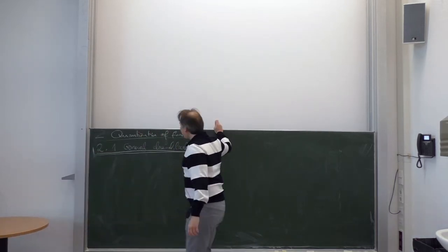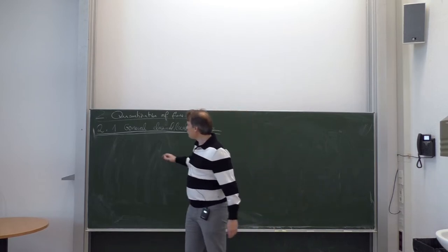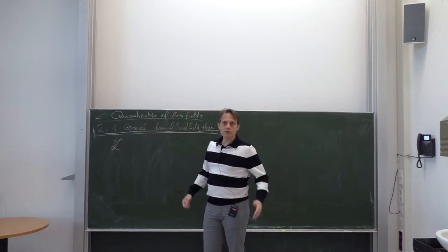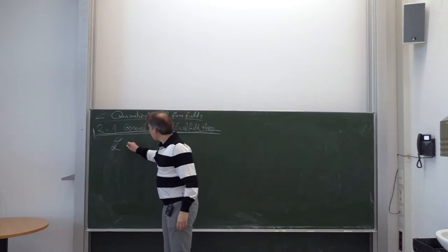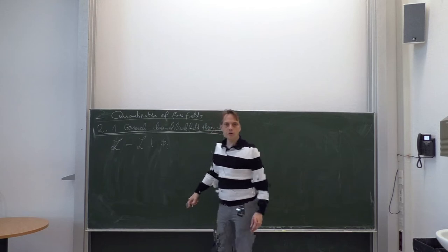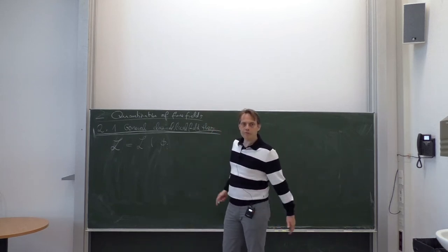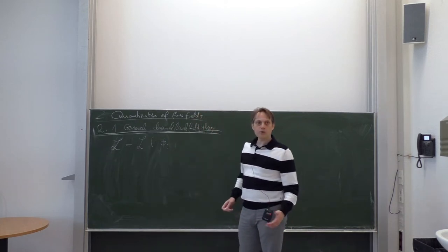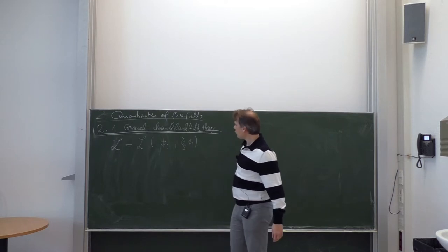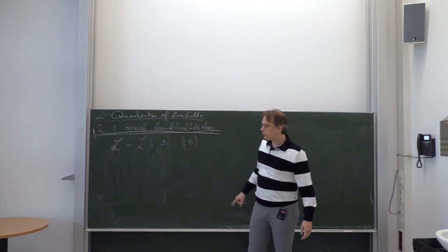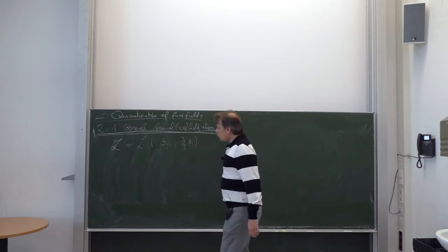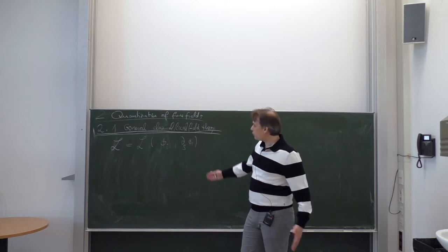Let's briefly define what we mean by classical field theory. If the field theory is local, then it can be described by a local Lagrangian, which depends on the fields and the derivatives of the fields. We always assume that the Lagrangian density depends on some set of fields, which I generically write as phi_i, where i is an index running through all the fields. The Lagrangian also depends on the derivatives d_rho phi_i, where d_rho is a relativistic derivative with respect to time or space. We do not allow higher than first derivatives in this course.